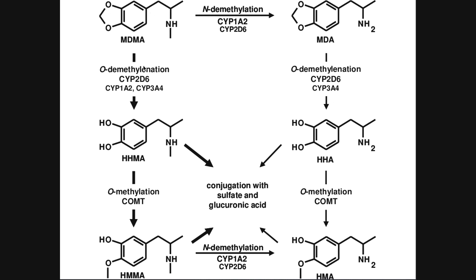The first step is an O-demethylation catalyzed by CYP2D6, CYP1A2, and CYP3A4 — on the MDA side, CYP1A2 does not catalyze this reaction. This P450 removes the methylene carbon between the two oxygen atoms, leaving two free hydroxyl groups, yielding HHMA from MDMA and HHA from MDA. These two metabolites can also undergo O-methylation catalyzed by catechol-O-methyltransferase, or COMT, methylating one of the hydroxyl groups to give HMMA on the left side and HMA on the right.